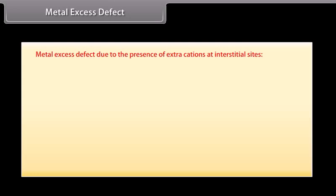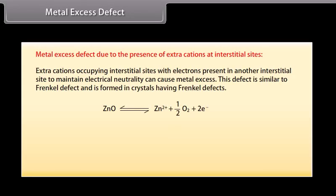Metal excess defect due to the presence of extra cations at interstitial sites: Extra cations occupying interstitial sites with electrons present in another interstitial site to maintain electrical neutrality can cause metal excess. This defect is similar to Frenkel defect and is formed in crystals having Frenkel defects.